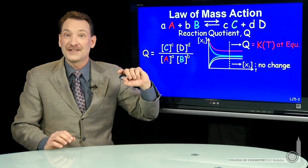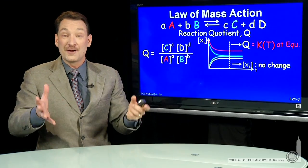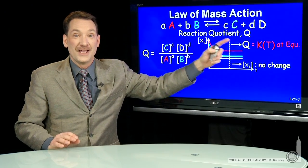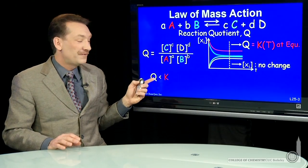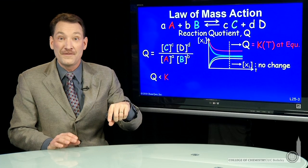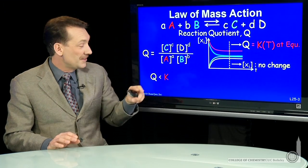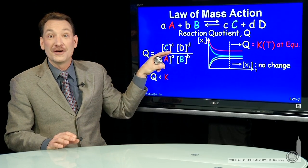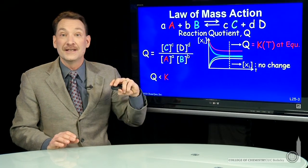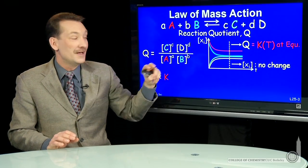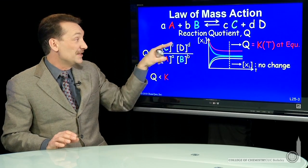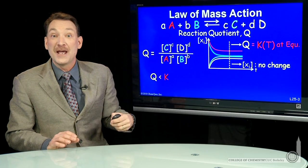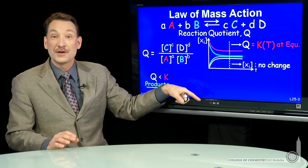So if you measure lots of these Ks, you can predict where the reaction is going to go. You could measure Q at any time. And if you find your Q is less than your known value of K, then Q is too small. So that means the numerator here is too large. The numerator is the products. So if these products are too small, because Q is too small, I should go make more of them. So I should go towards products.